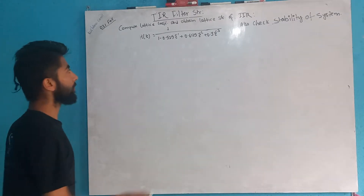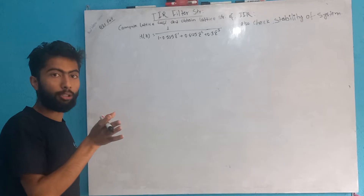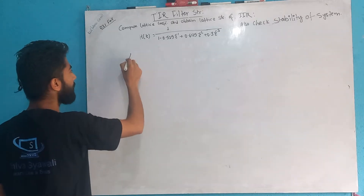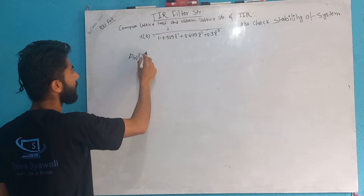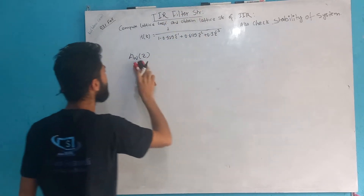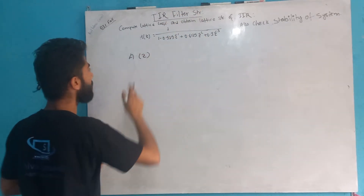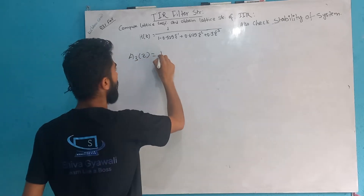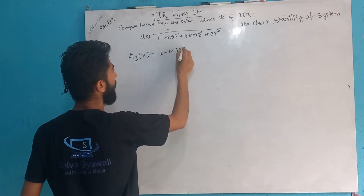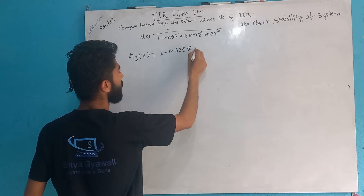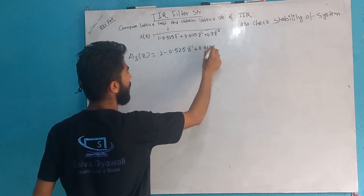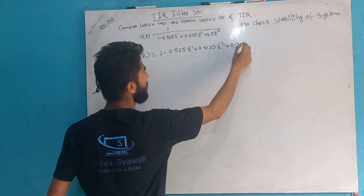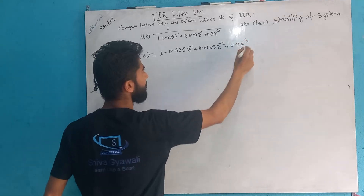How do we do this? The lattice structure can be done. We have a denominator, and the denominator is what we call A(z), a third order. So A3(z) equals 1 minus 0.525z⁻¹ plus 0.6125z⁻² plus 0.3z⁻³.